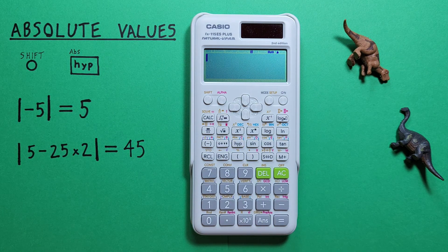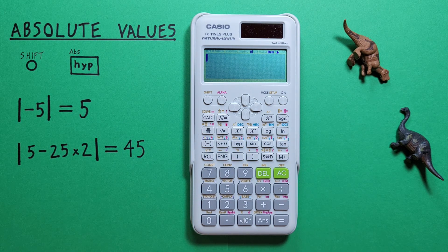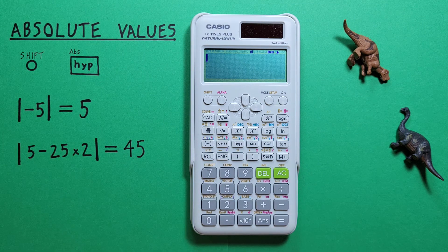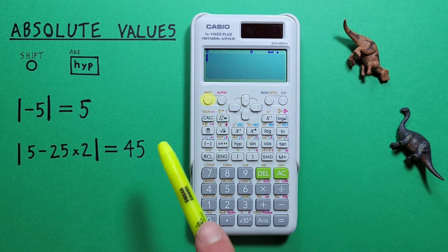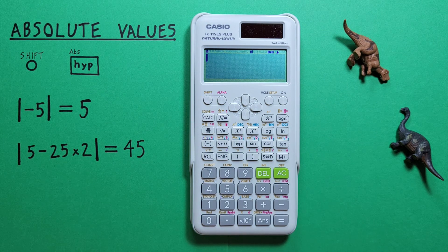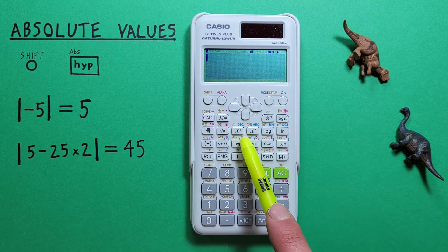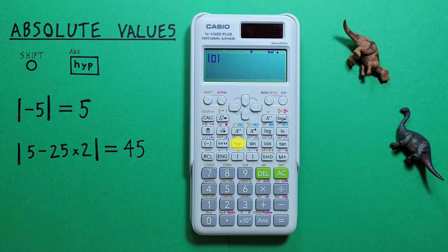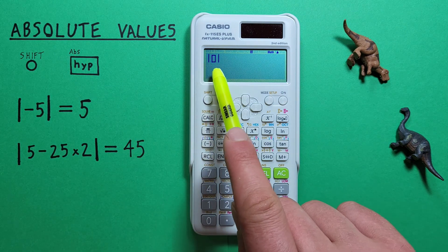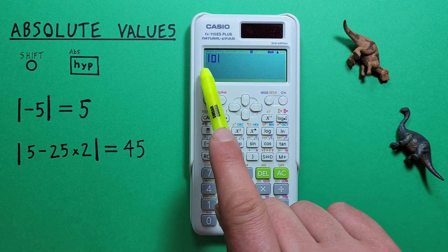If we want to find the absolute value of a number, for example negative 5, what we do is press shift and then the HYP or hyperbolic key. We see here are two straight brackets that indicate an absolute value.